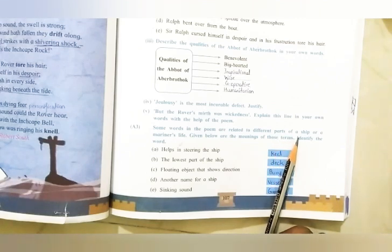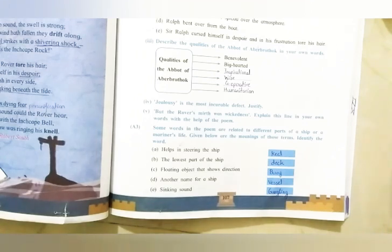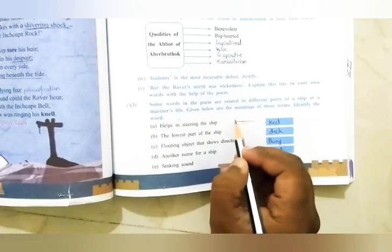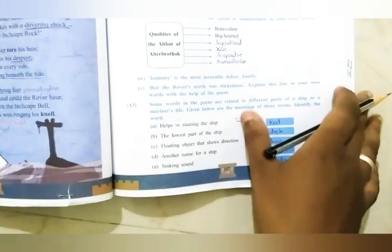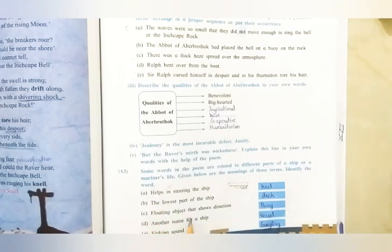Some words in the poem are related to different parts of a ship or a mariner's life. Mariners are people who work on ships and move in oceans and seas. From the given meanings, identify the word. 'Helps in steering the ship' — it's the keel. The keel is a small part below the ship that balances the ship on the water and does not let it collide on either side. The lowest part of the ship is the deck. 'Floating object that shows direction' — that is the buoy. Another name for a ship is vessel. 'Sinking sound' — that is the gurgling sound.